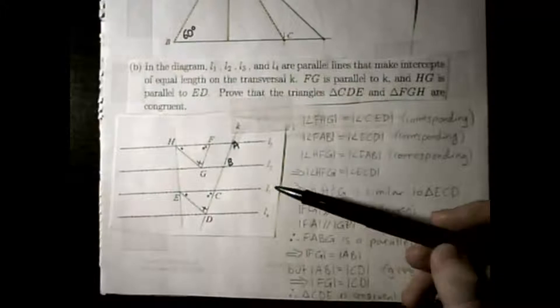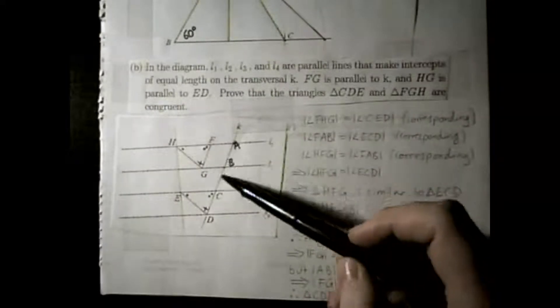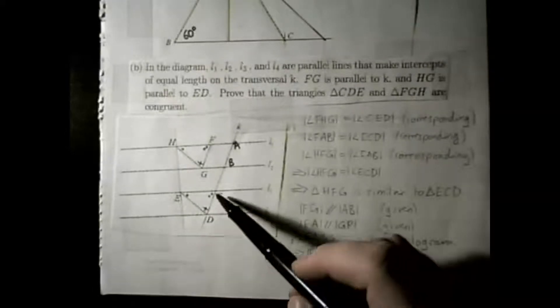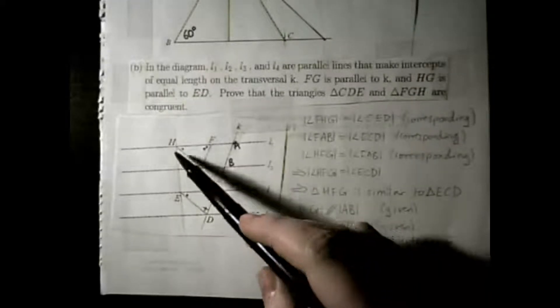In part B, you're given a set of parallel lines L1, L2, L3, and L4. There's a transversal line K. You're told that line segment FG is parallel to K, and HG is parallel to ED. Your job is to prove that triangle CDE and triangle FGH are congruent.